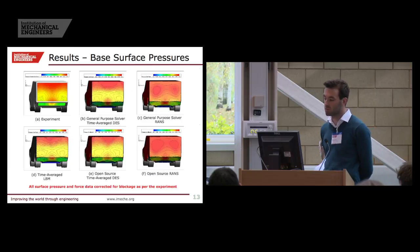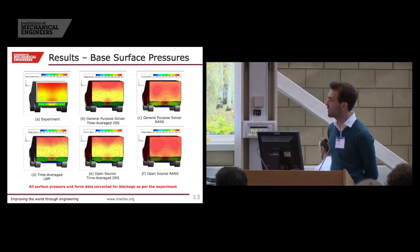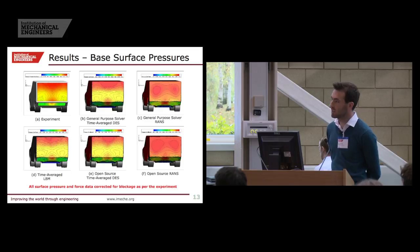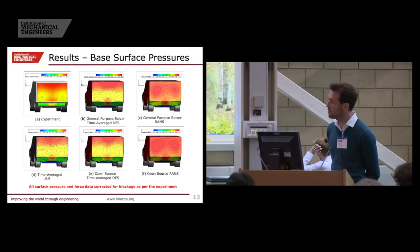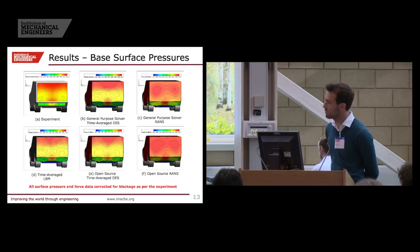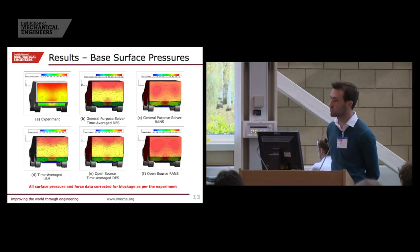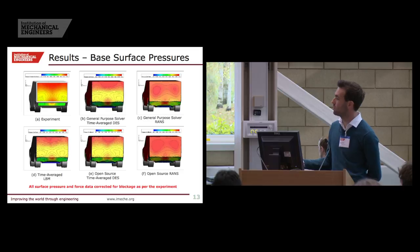Moving on to base surface pressures — as expected from the flow velocity planes — general purpose RANS and open source RANS are not very accurate compared to the experiment. But comparing to the time-averaged DES and time-averaged LBM, we see much better agreement. Differences between all computational results are really restricted to the diffuser region, with very little difference on the actual base surface itself.